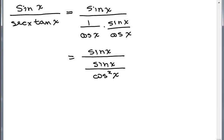Now I can think of this as the whole numerator divided by the denominator. So that is sine of x, and I'm going to write that as sine of x over 1 divided by the sine of x over the cosine squared x.